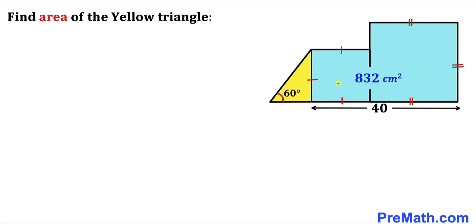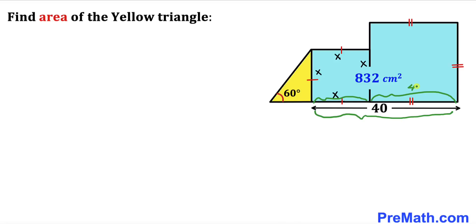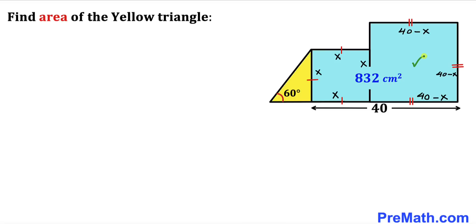Let's go ahead and get started. Let's focus on the smaller square and assume that its side length is x centimeters. Since it is a square, all sides are x centimeters. We know the whole horizontal length is 40 and this length is x, so the side length of the larger square is going to be 40 minus x, and all its sides are 40 minus x across the board.